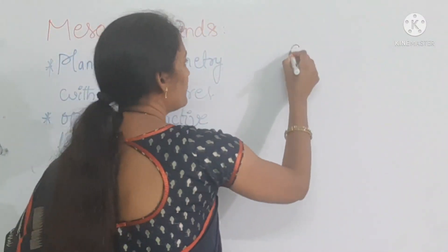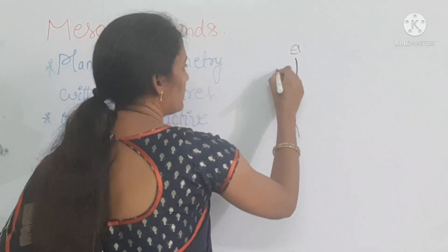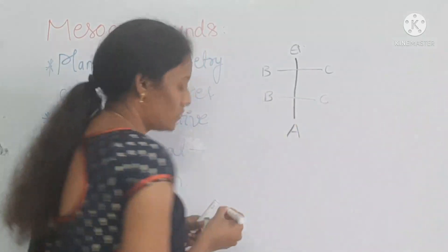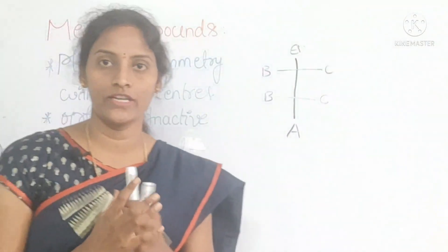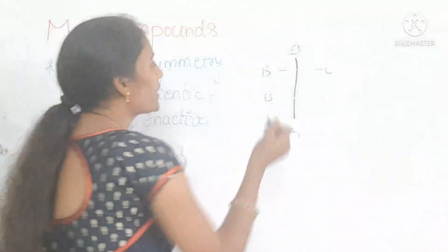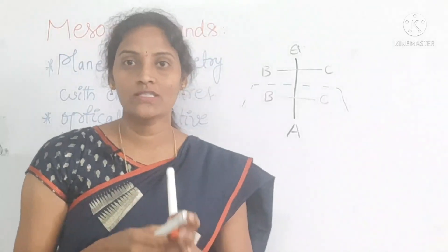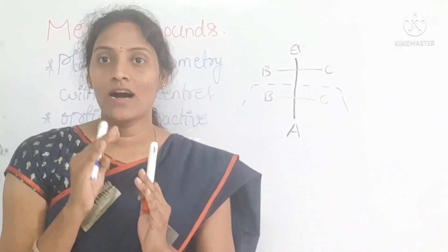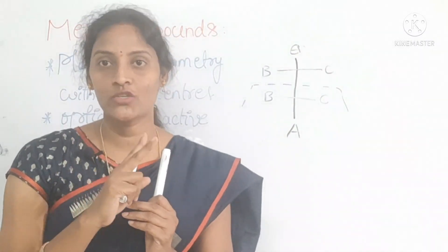See students, this is one compound. Imagine this is A, this one also A. This is B, this is C. This is also B, this is also C. How can you identify if this molecule or isomer is a meso compound or not? If you can cut this molecule into two equal halves — because the chiral centers in that molecule are having the same functional groups — then only you can cut the molecule into two equal halves.